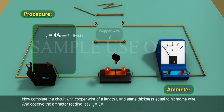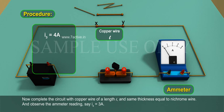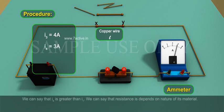Now complete the circuit with copper wire of length L and same thickness equal to nichrome wire. And observe the ammeter reading. Say I4 is equal to 3A. We can say that I4 is greater than I1. We can say that resistance depends on nature of its material.